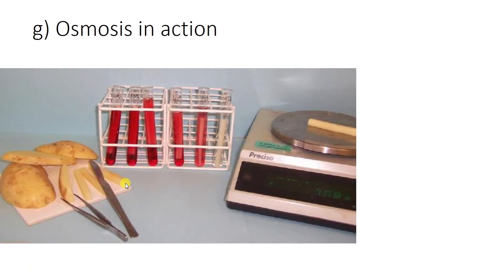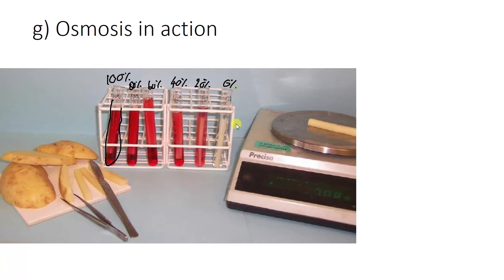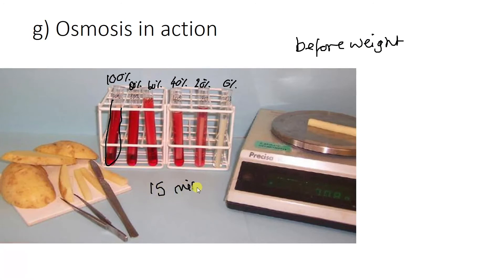A way you can demonstrate osmosis is with a practical involving potatoes, which you might have done in school. It isn't the most exciting practical, but it does demonstrate osmosis quite nicely. You use a knife to cut up strips of potato, then you have test tubes with different solutions — basically squash, a sugar solution. Over here we have 100%, then down to 80, 60, and in 20% intervals all the way down to 0%, which is just water. You cut up the potato strips, weigh them first to get an initial reading, then put them into the test tubes for about 15 minutes. After that, you dry them off with a bit of cloth and weigh them again to get an after weight.